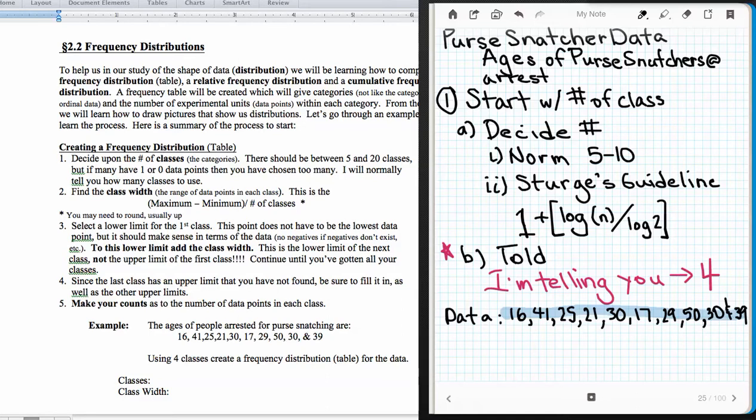Now, there's actually a formal way of finding an approximate number of classes to use, and that's called Sturgis guideline. And the formula for that is one plus the log of n, which is the sample size, divided by the log of two. And if you take a look at our data points, we have ten data points. Our n is equal to ten in the purse snatcher data right here. And you put in ten for log here, the log of ten divided by the log of two, and that plus one is going to give you like 4.3, and we round it as we would any number, and it rounds down to four. So I'm telling you four, it's appropriate even according to Sturgis guideline. So we're going to use four classes.